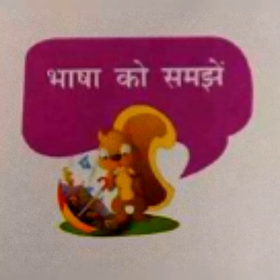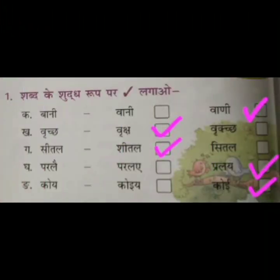Ab Bhasha ko samjhe. Iske antargat pehla prashna hai: Shabd ke shuddh roop par tik lagao. The first word given is Bani — yeh poetical language mein hai, toh yeh correct nahi hai. Correct word Vani par tik lagao — that is the second option. Next is Bridge — bridge nahi hota, Vriksh hota hai, so first option is correct. Seetal ka shuddh roop Sheetal kehte hain — first option, put tick. Parle pralaye — second option is correct. Koe means koei — second option is correct.